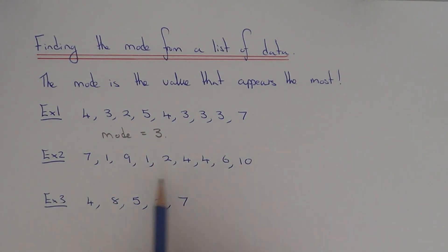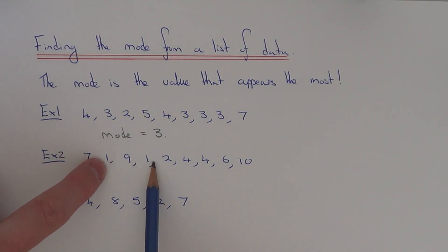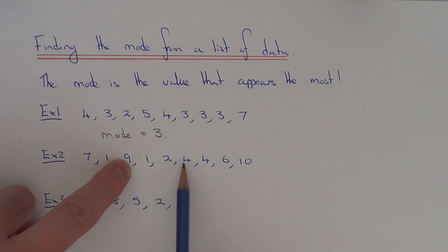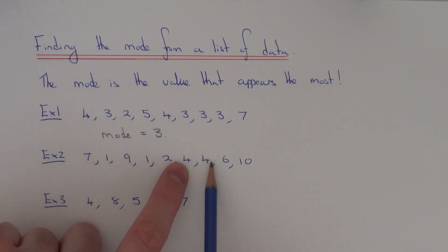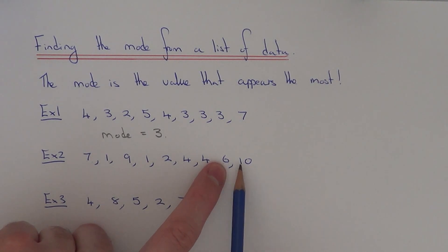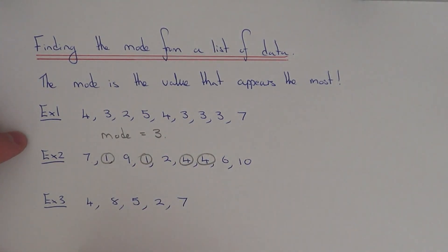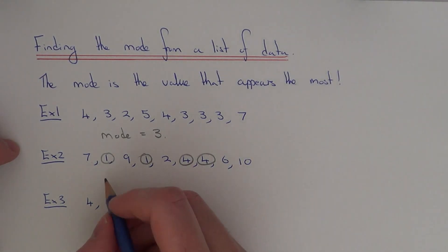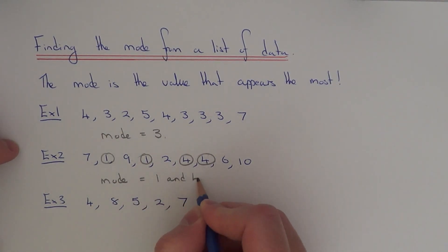So let's move on to example 2. This time we've got 7, 1, 9, 1, 2, 4, 4, 6 and 10. We only have 7 coming up once, 1 comes up twice, 9 comes up once, 2 comes up once, and we've got 2 fours, and then we've got 1 six and 1 ten. So this time we have 2 modes, because 1 comes up twice and 4 comes up twice. So these are the most popular numbers. In this question we have 2 modes: 1 and 4.